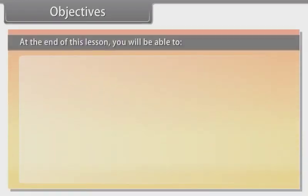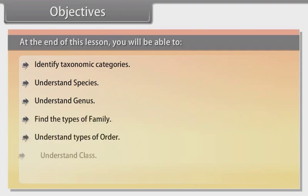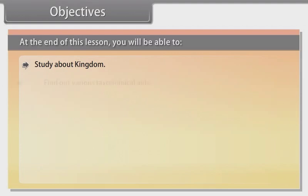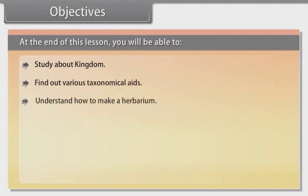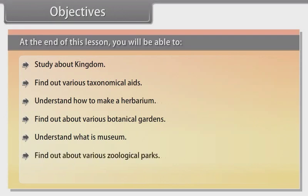At the end of this lesson you will be able to: identify taxonomy categories, understand species, understand genus, find the types of family, understand types of order, understand class, understand phylum, study about kingdom, find out various taxonomical aids, understand how to make a herbarium, find out about various botanical gardens, understand what a museum is, find out about various zoological parks, and understand what a key is.